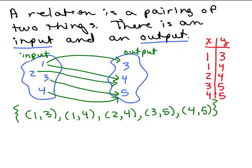You could also describe this in words: 1 goes to 3, 1 also goes to 4, 2 goes to 4, 3 goes to 5, and 4 goes to 5. This particular relation doesn't have a formula, but we'll be getting into some where we could also write it as a formula.